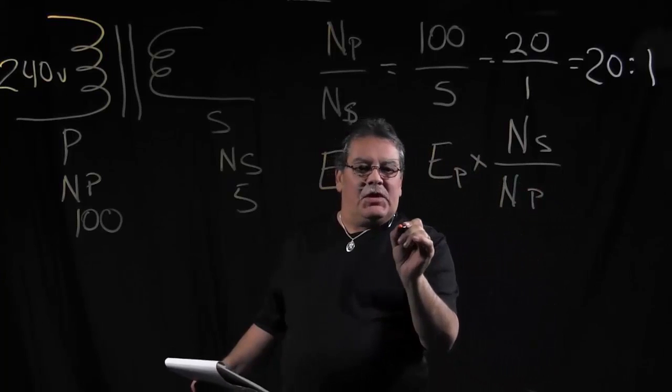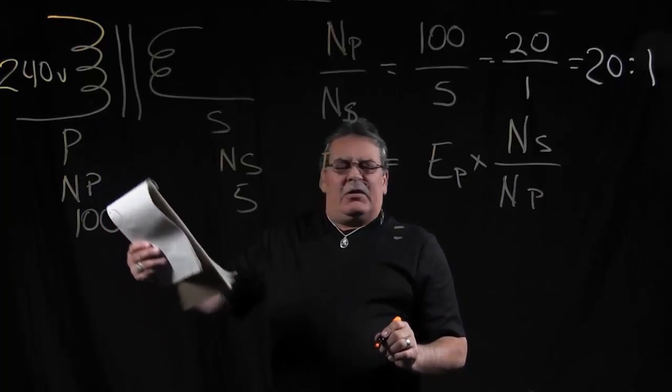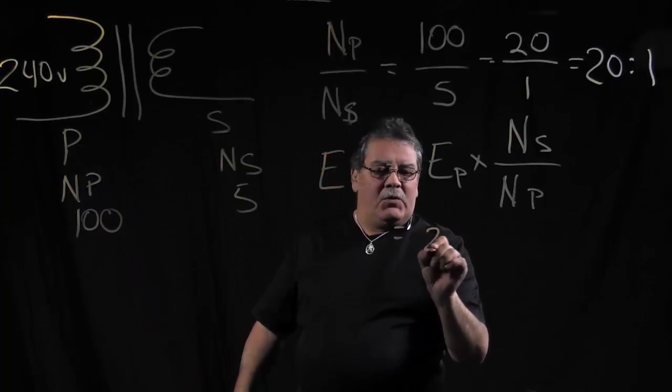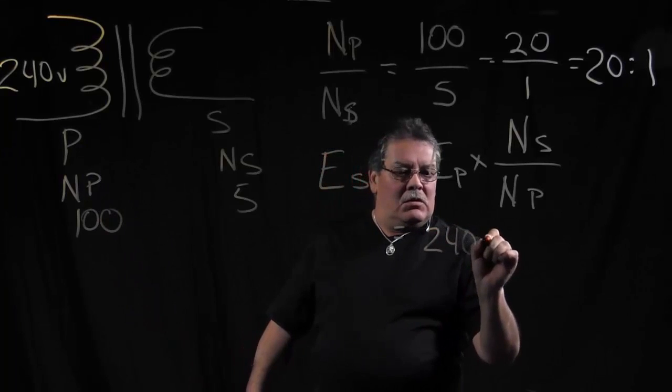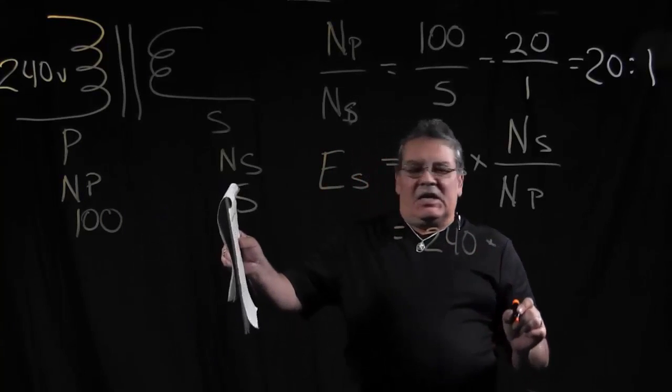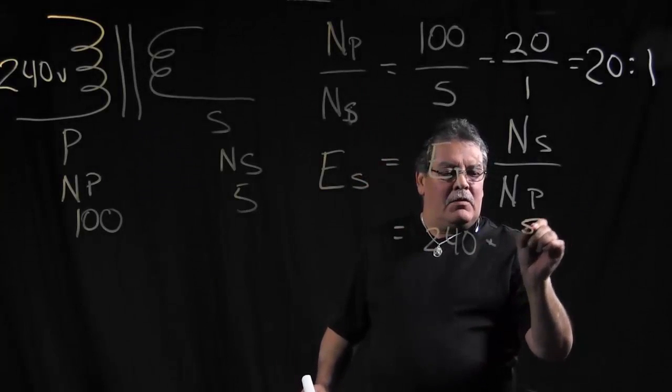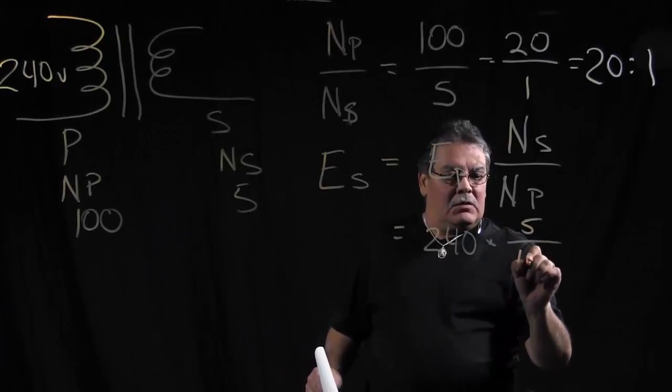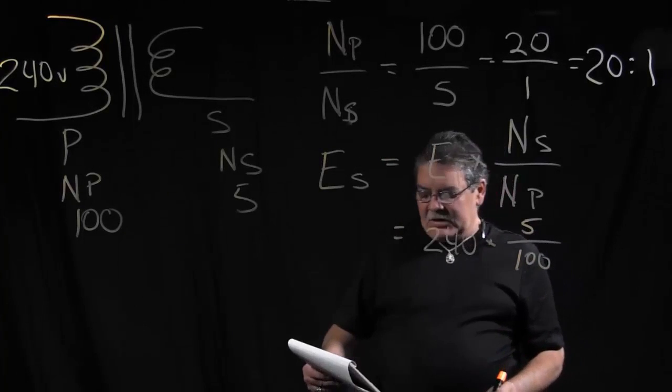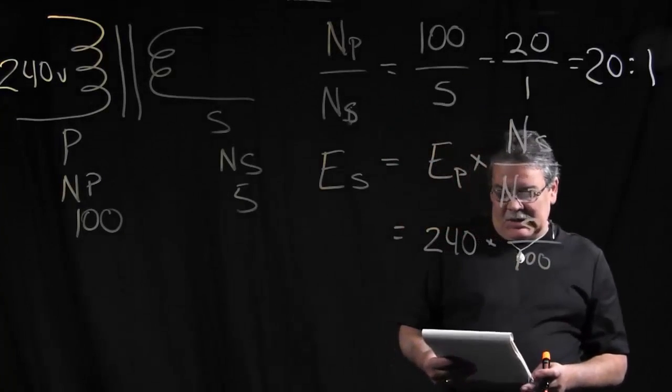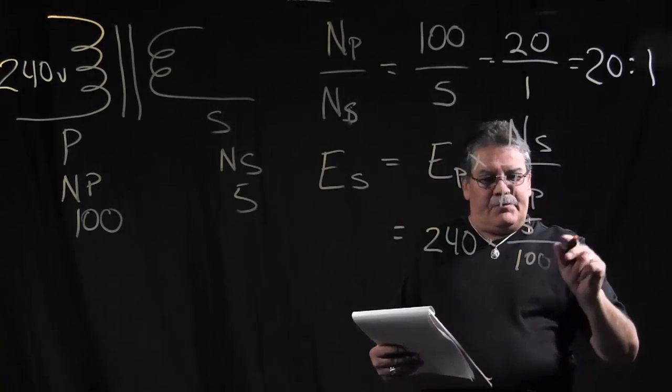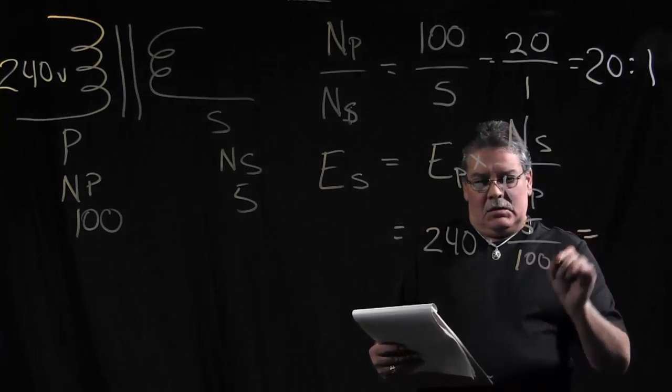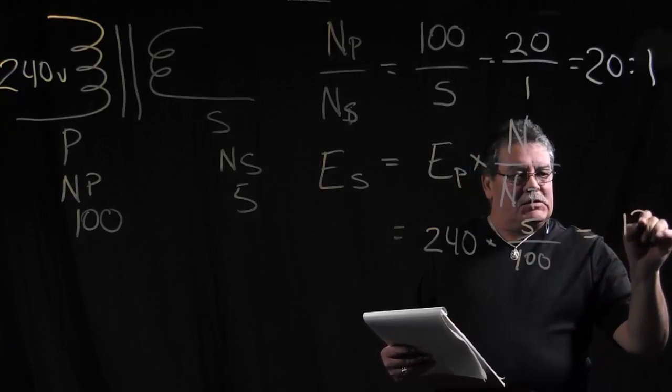So in this situation here, we have our primary voltage of 240 volts, times our turns in the secondary is 5, and our turns in the primary is 100. OK, so we could do this math, and what we would come up with is 12 volts.